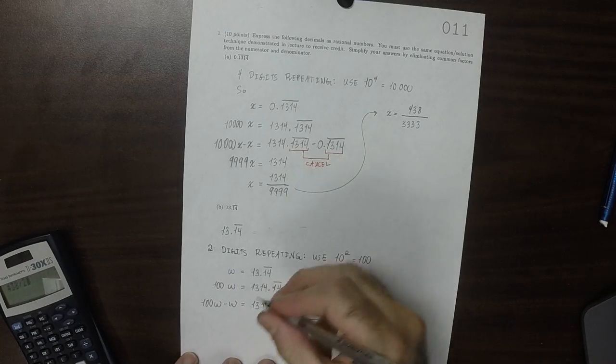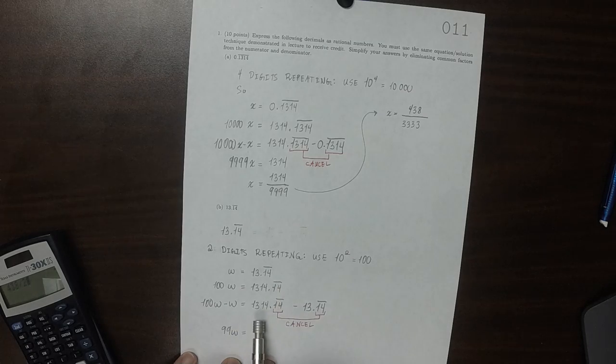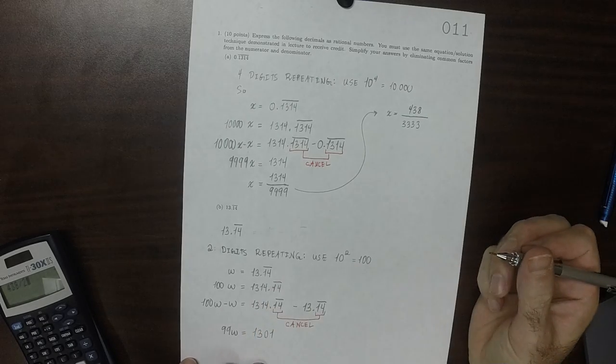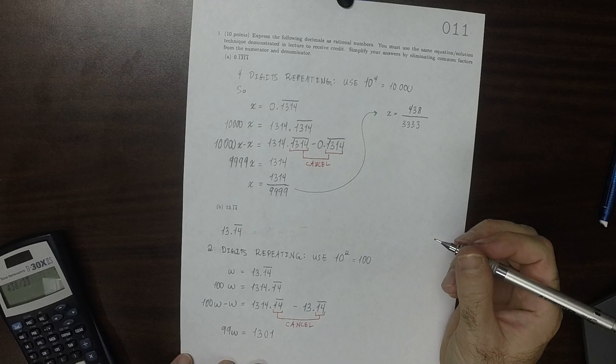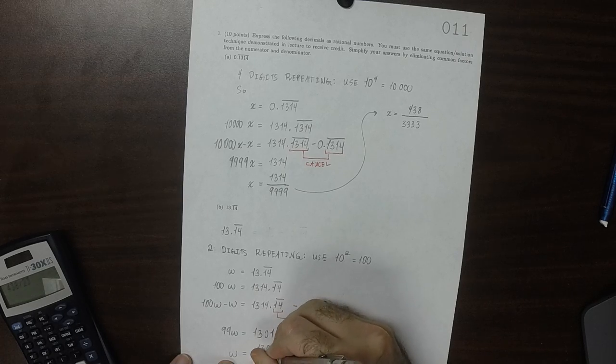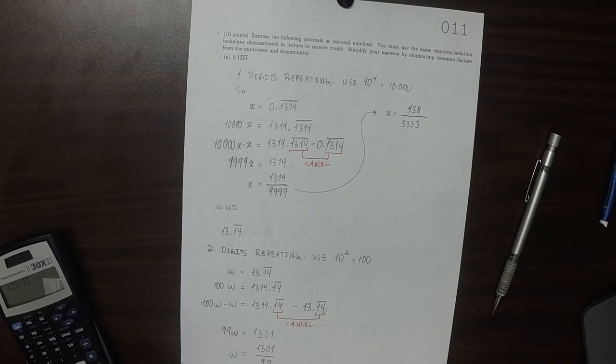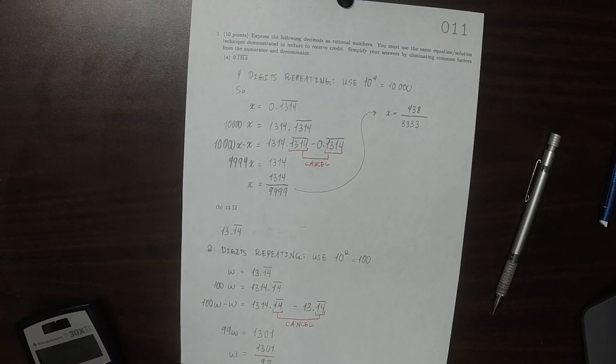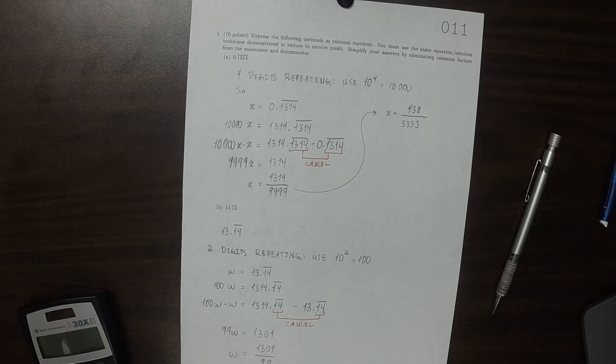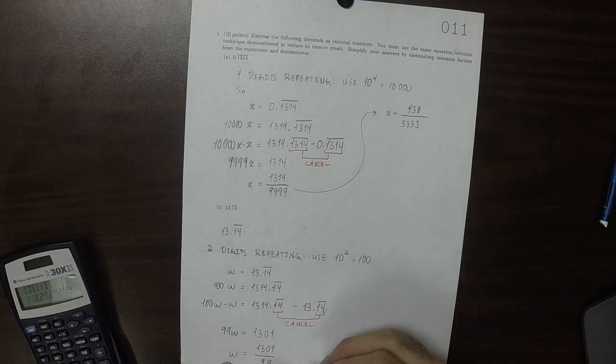So 100w minus 1w is 99w. And then 1314 minus 13 is 1301. So w is 1301 over 99. And let's think, what are the factors of 99? 3 and 11, the prime factors. So 1301 is not divisible by 3, and is it divisible by 11? It is not. And so that's the answer.